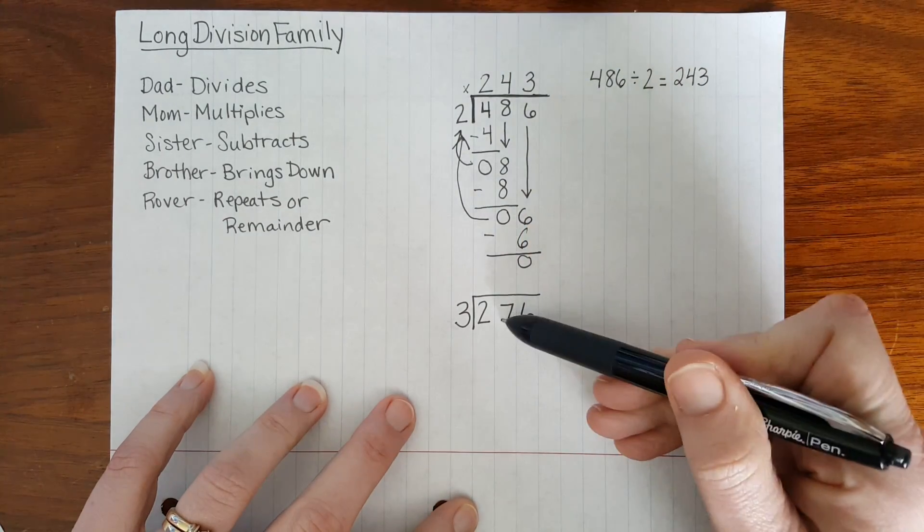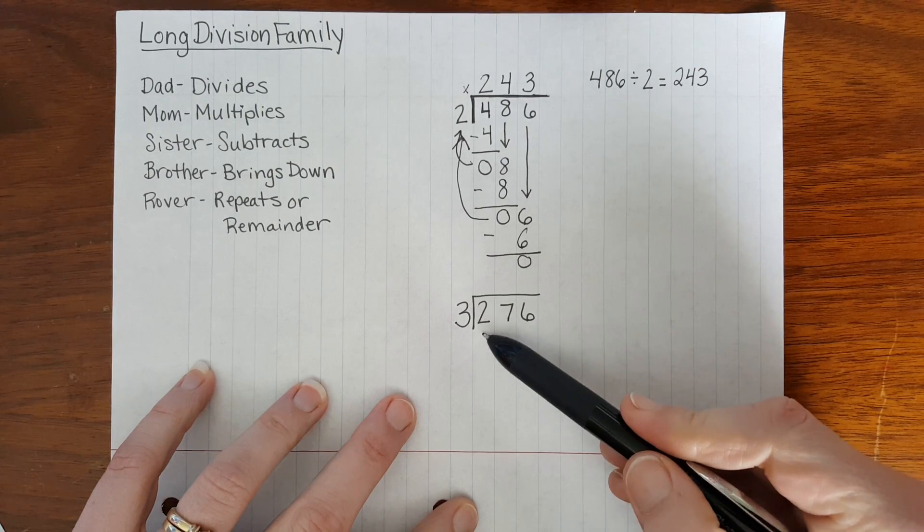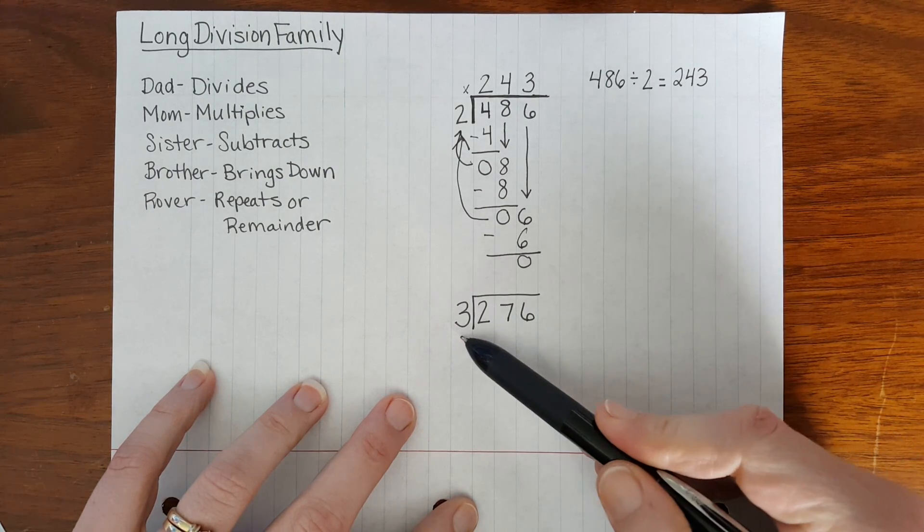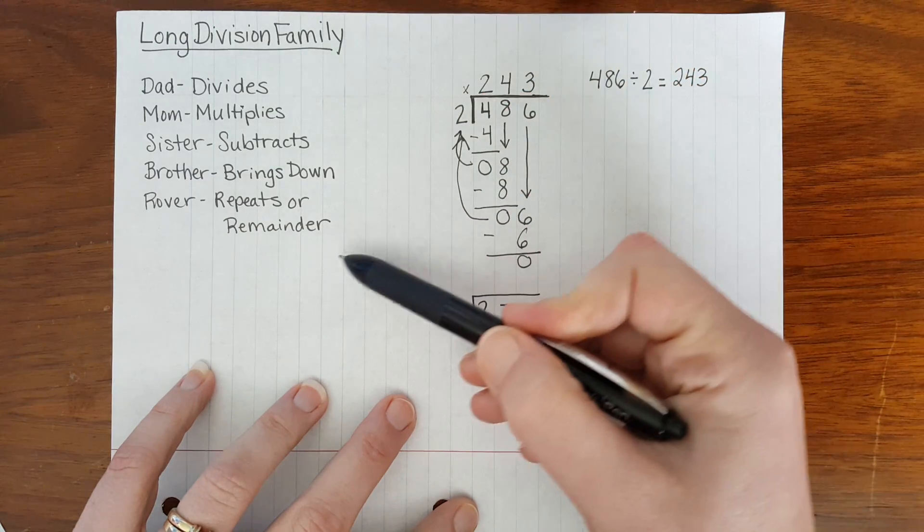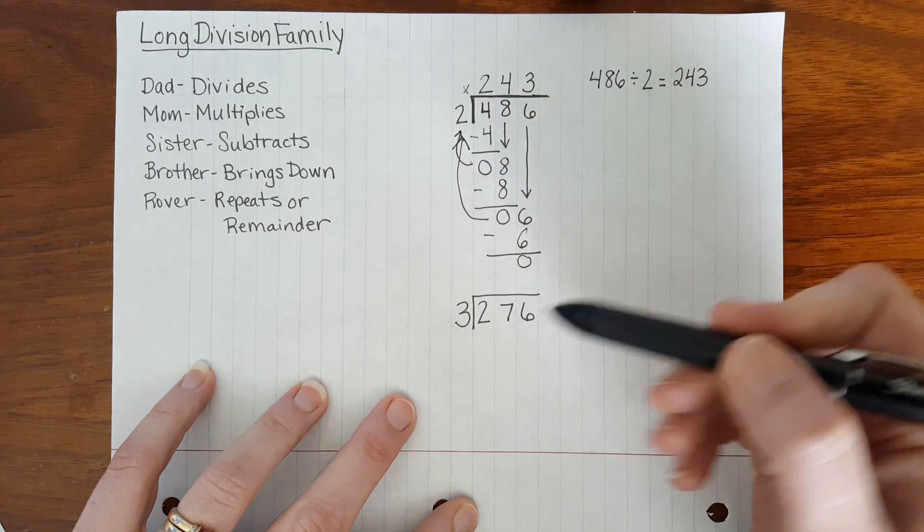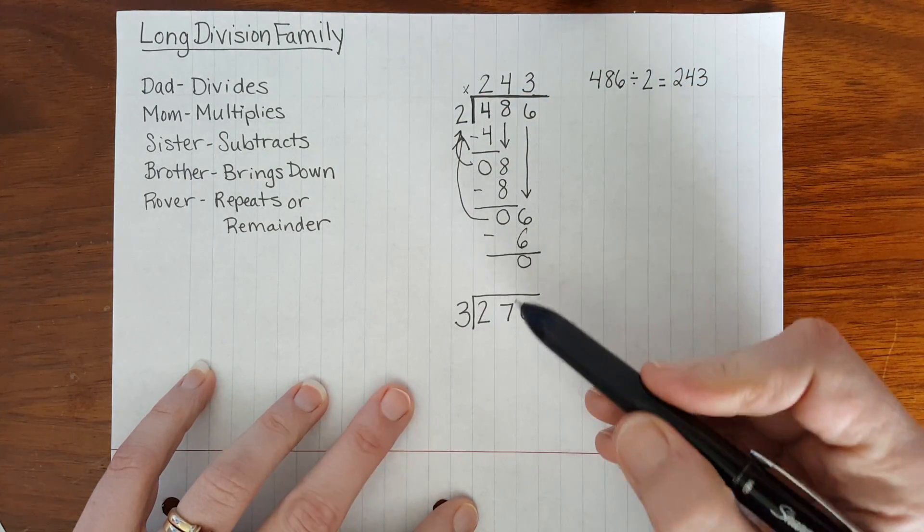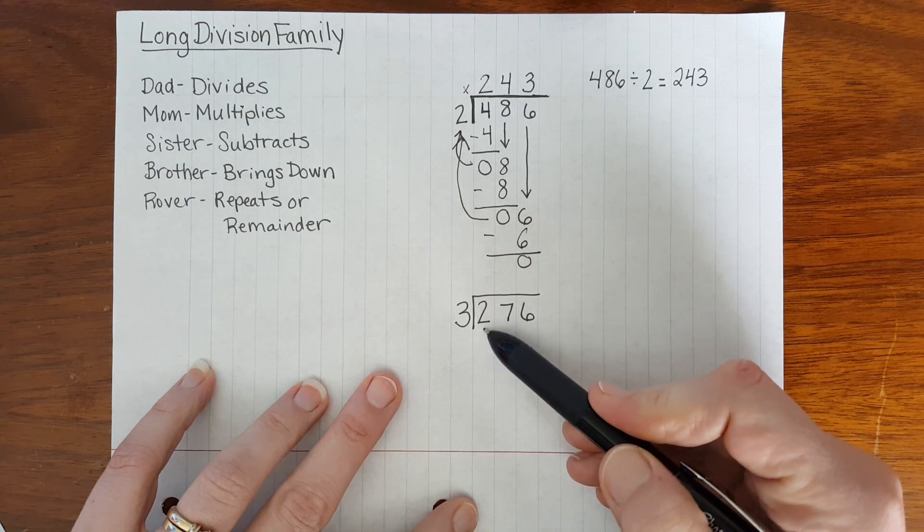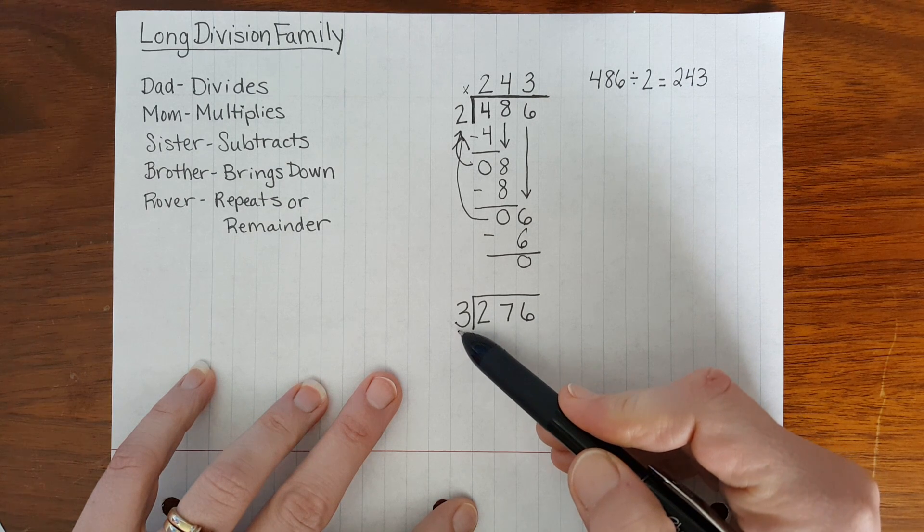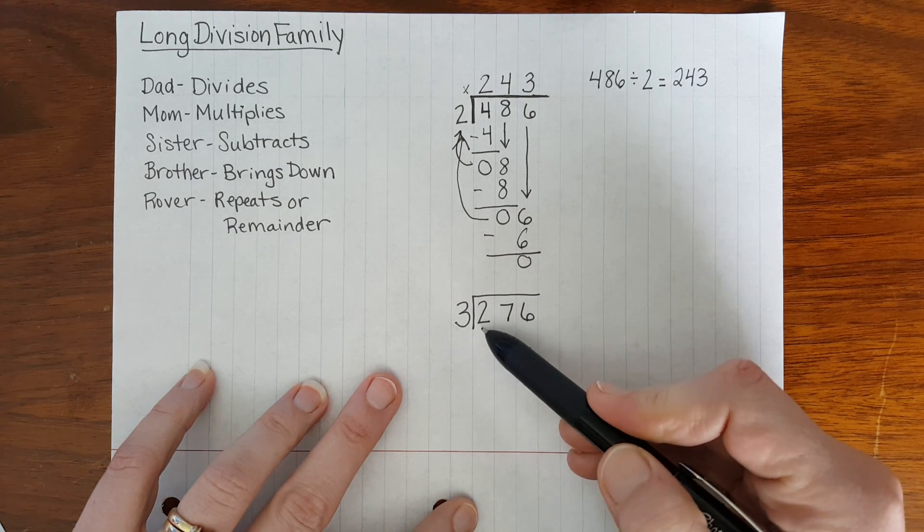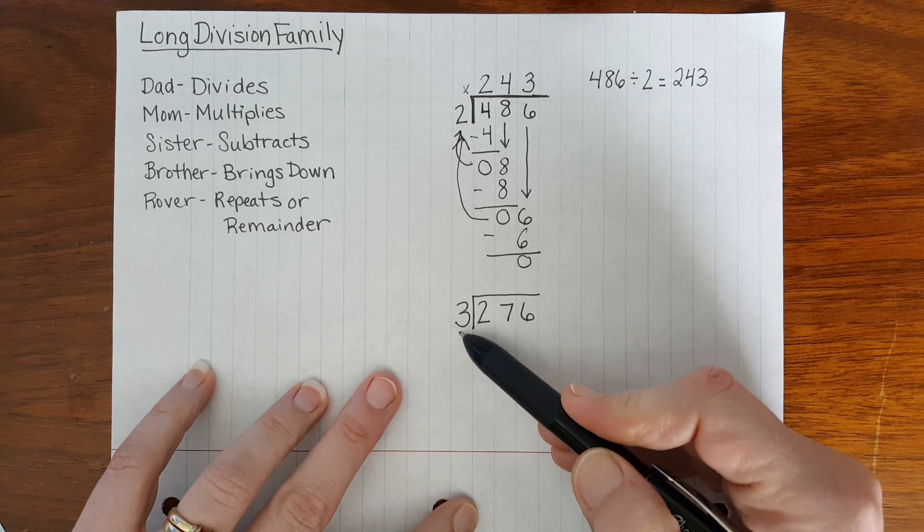If we look at another problem, 276 divided by 3, we use these same steps to long division in this problem. Dad begins and he looks at our first digit of our dividend and says 2 divided by our divisor of 3. 2 divided by 3.